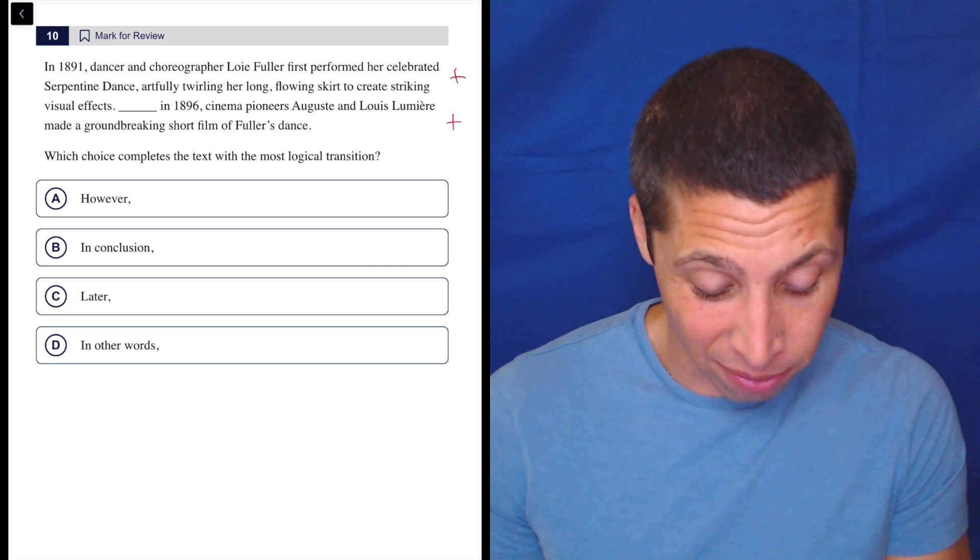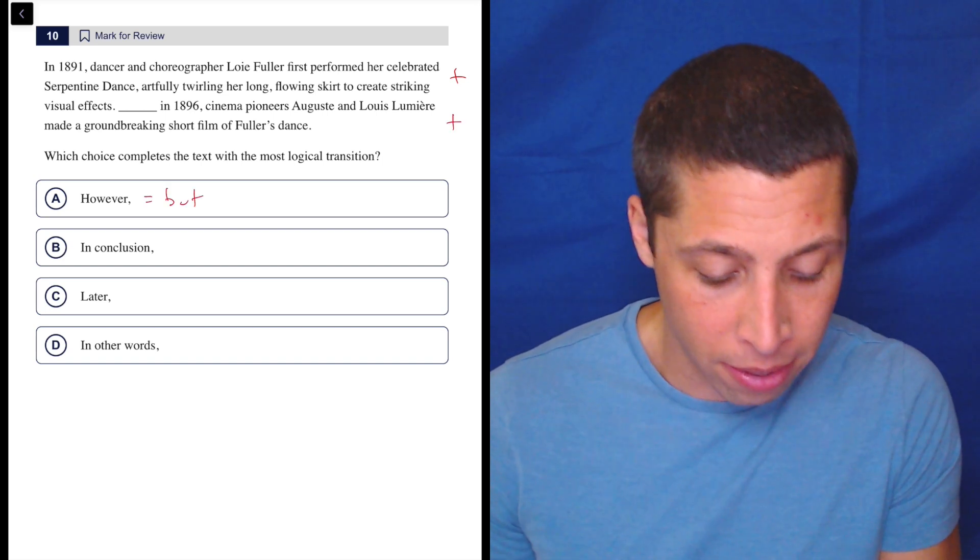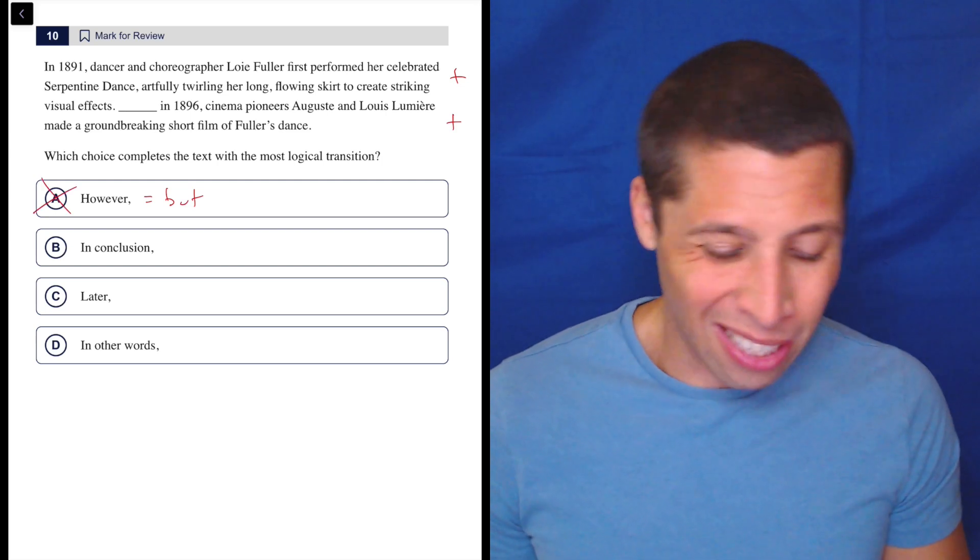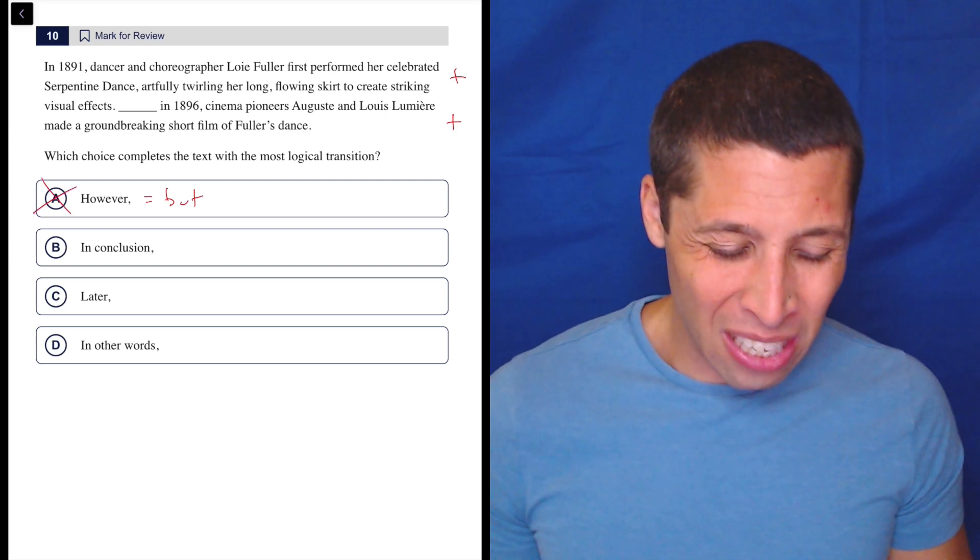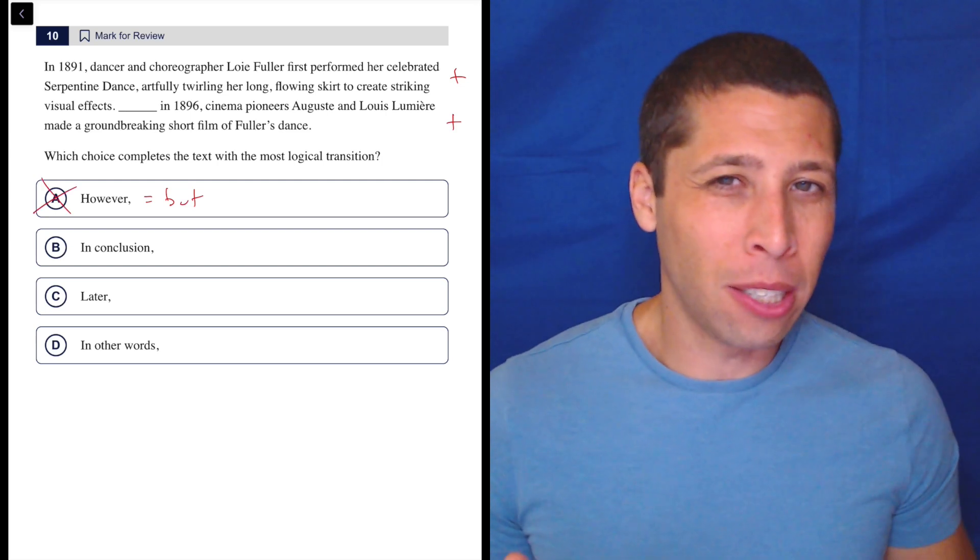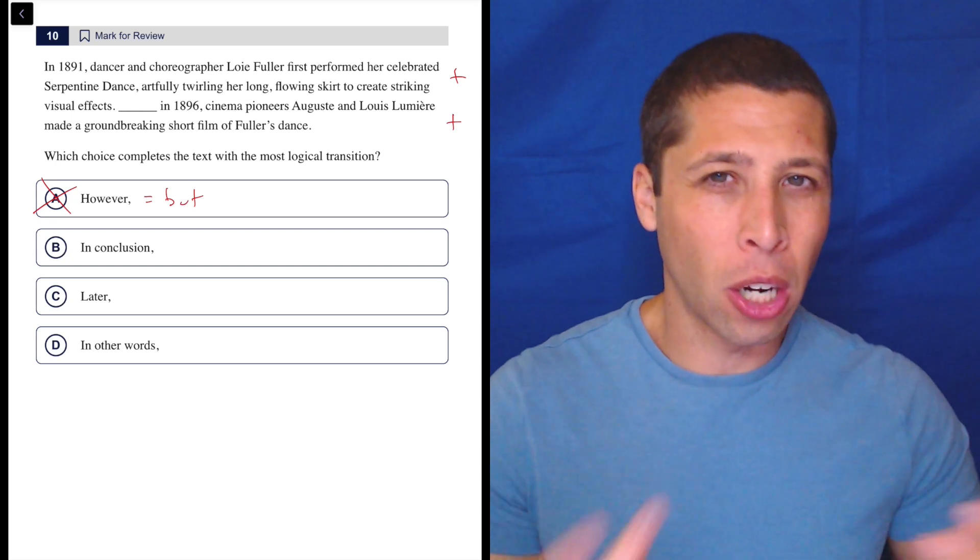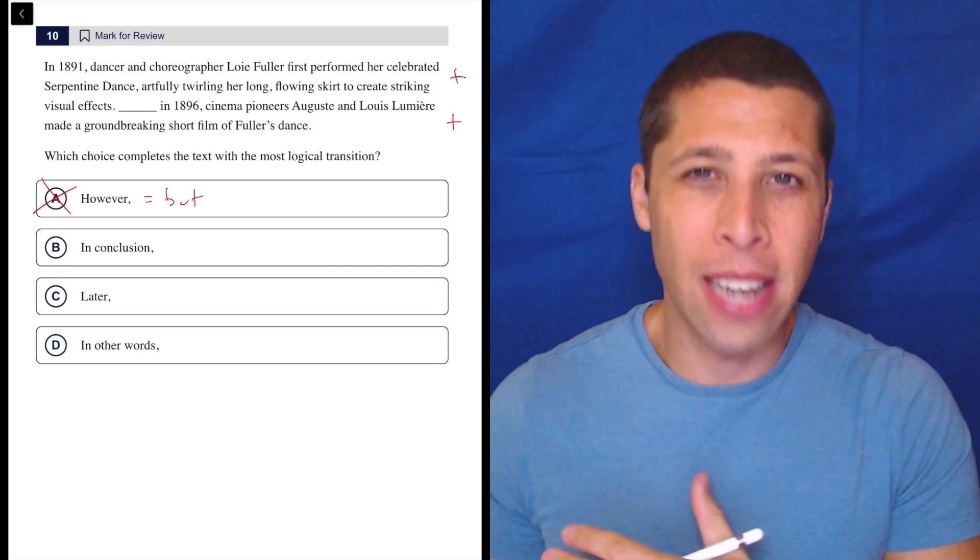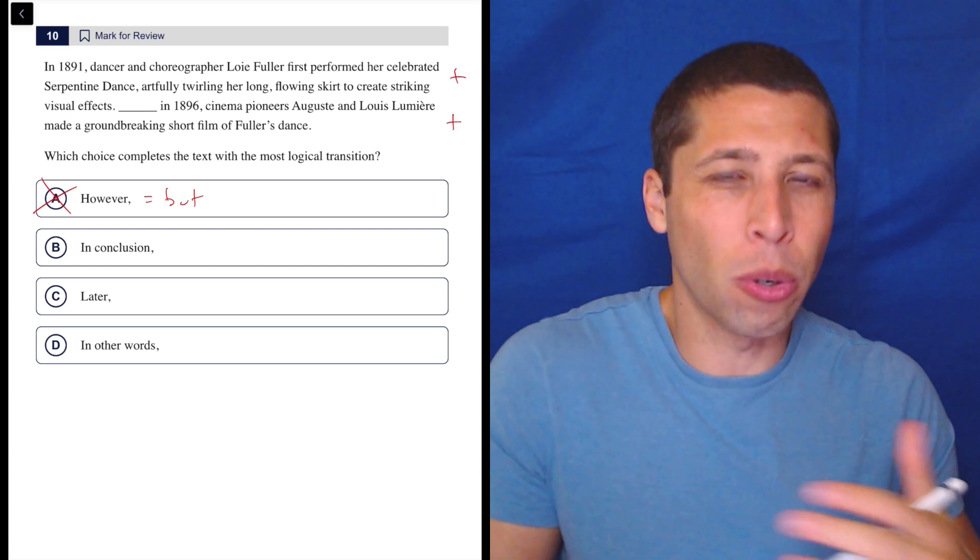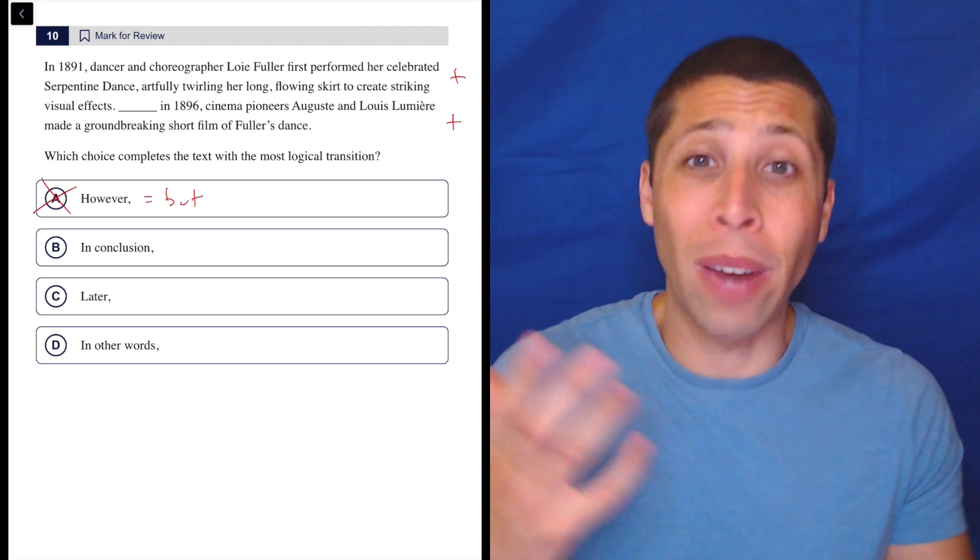So it's probably not however, right? Because that would be a contrast. That's a but. So that seems wrong. In conclusion, well, why would it be in conclusion, right? So that kind of means almost like we're making an argument. Just because she did this dance, there's no conclusion that they would film it. Those don't have to go together.